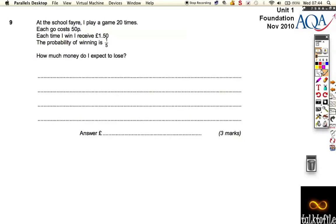Okay, the last question on this November 2010 paper. So we've got a little game, let's play a game 20 times. Each go costs 50p, and each time I win you'll receive £1.50, and the probability of winning is 1/5.